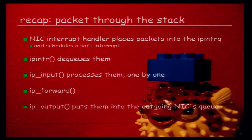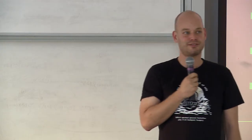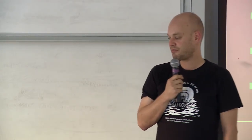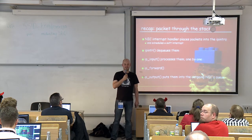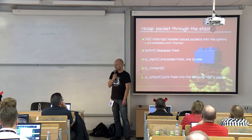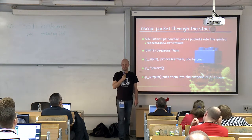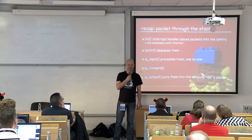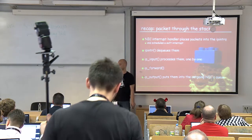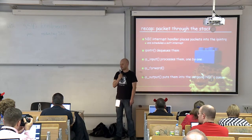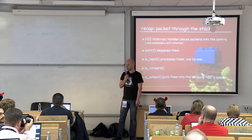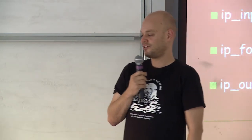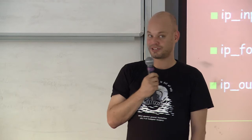Quick recap of how a packet travels through the stack. The network interface card, when it receives a packet, interrupts. The interrupt handler gets the packet off the DMA rings of the NIC, puts it into the IP interrupt queue — ignoring IPv6 here — and afterwards schedules a soft interrupt, basically a flag checked before the kernel returns to userland. The soft interrupt subsystem calls IP intr to dequeue those packets, which gives them to IP input, which processes them one by one.